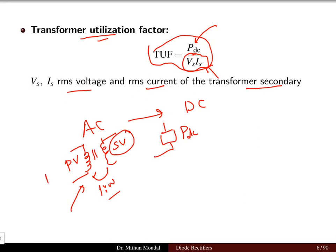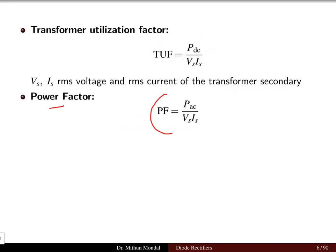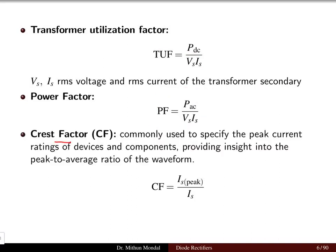For example, if we have a voltage of 11 kV, we first step it down to a reasonable voltage such as 220 V, and then it is given to the rectifier for conversion. The power factor is the ratio of the output AC power to the power of the transformer secondary, given by the product of VS and IS. The crest factor, commonly used to specify the peak current rating of components, gives insight into the peak-to-average ratio of the waveform — it is the peak current divided by the average current.